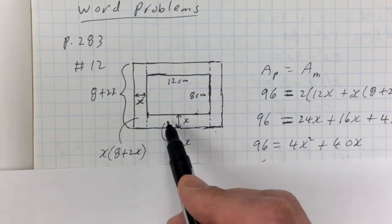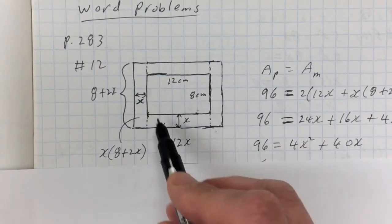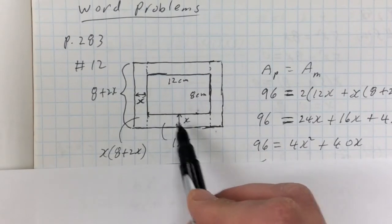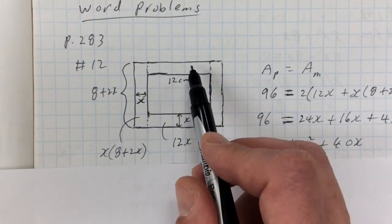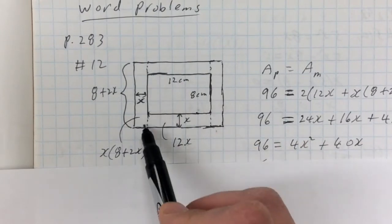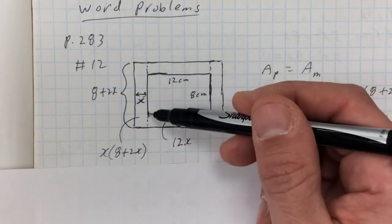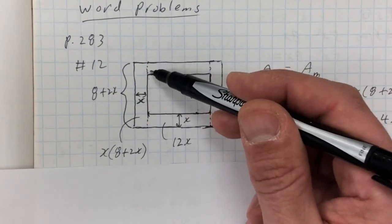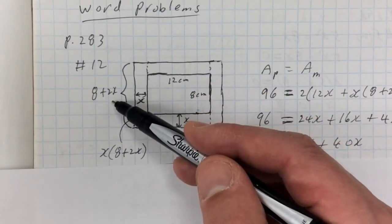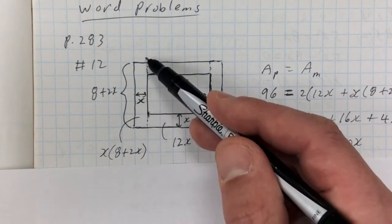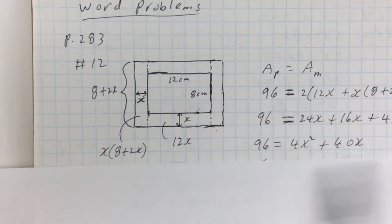The expression for the mat area is made up of rectangles around the picture. There's a rectangle that is 12 centimeters long by X wide, so its area is 12X, and there's another one on the opposite side — so two of those. The rectangle on the side has width X, but it's longer than 8: it's 8 plus X on one side and another X on the other, making its height 8 plus 2X. So the area of that rectangle is X times (8 plus 2X), and there are two of those.